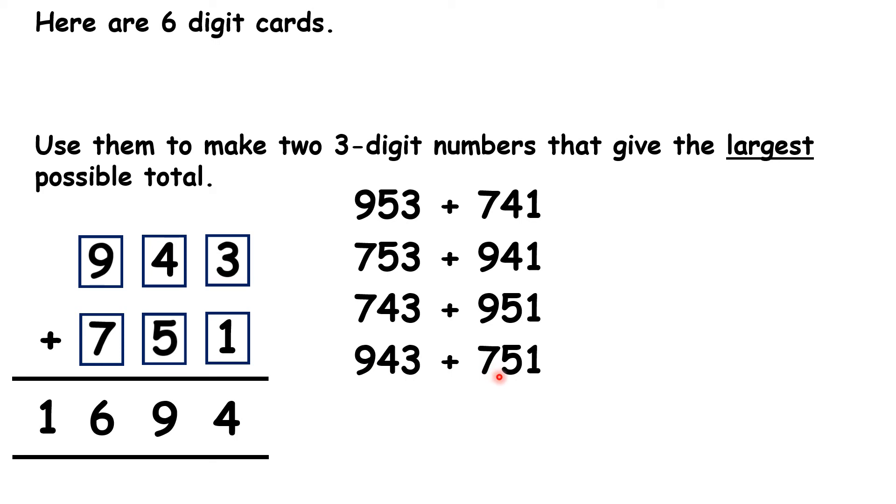So, because we're adding, we get the same total whether the digits are in the top or bottom number, as long as they're in the same place value, as long as they stay in the hundreds, tens or units. Because with addition, order doesn't matter.